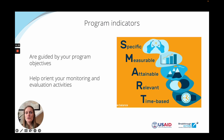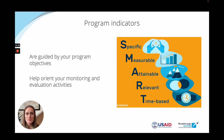Program indicators are best when they are SMART — a really useful acronym. The best indicators are specific, meaning related to a certain behavior, attitude, or health area of interest. They are measurable, meaning you can actually collect data for them. They are attainable, meaning they are possible. They are relevant to your program's objectives and activities. And they are time-based. For example, 'number of health providers trained on family planning counseling' is most useful when we add a time-based element — for example, the number of people trained during the last six months.